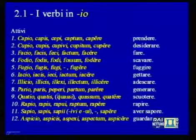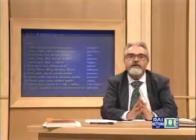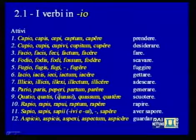The verb 'pario' makes its perfect 'peperi', showing reduplication: the initial syllable 'pe-' appears twice, with the change of 'a' to 'e' — a reduplication of the perfect type found also in 'tango, tangis, tetigi'. Anyone who knows Greek knows that the Greek perfect is formed precisely through reduplication of an initial syllable with the same initial consonant followed by the vowel 'e'. Because the '-io' verbs are numerous — the list of twelve shown is not exhaustive, and compounds of 'capio', 'facio', etc. are very numerous — beyond the active '-io' verbs there are also deponent '-io' verbs, fortunately fewer but rather frequent in use.